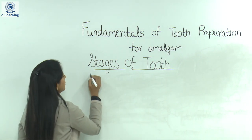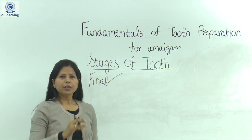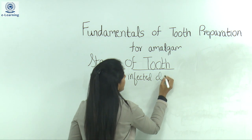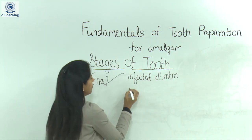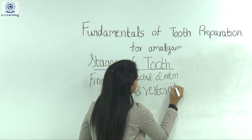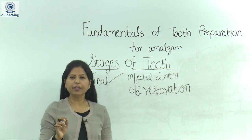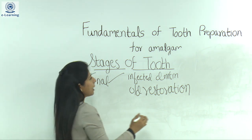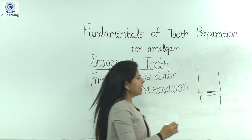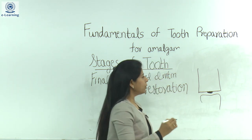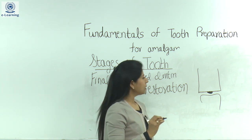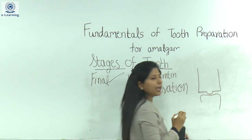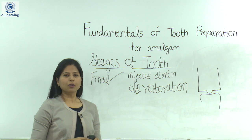Coming to the final stages of tooth preparation. The first step is removing remaining caries or infected dentine and old restorative material. We inspect the cavity, and if we find any infected dentine or old restorative material, we remove only that portion with a round burr without touching the other parts of the cavity. So if caries remains in one portion, only that portion is further prepared, and the rest of the cavity is left untouched.